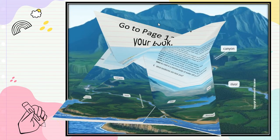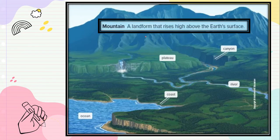The first one is the word mountain. Mountains make high triangular shapes — we learned this in Grade 2. They are high above Earth's surface.